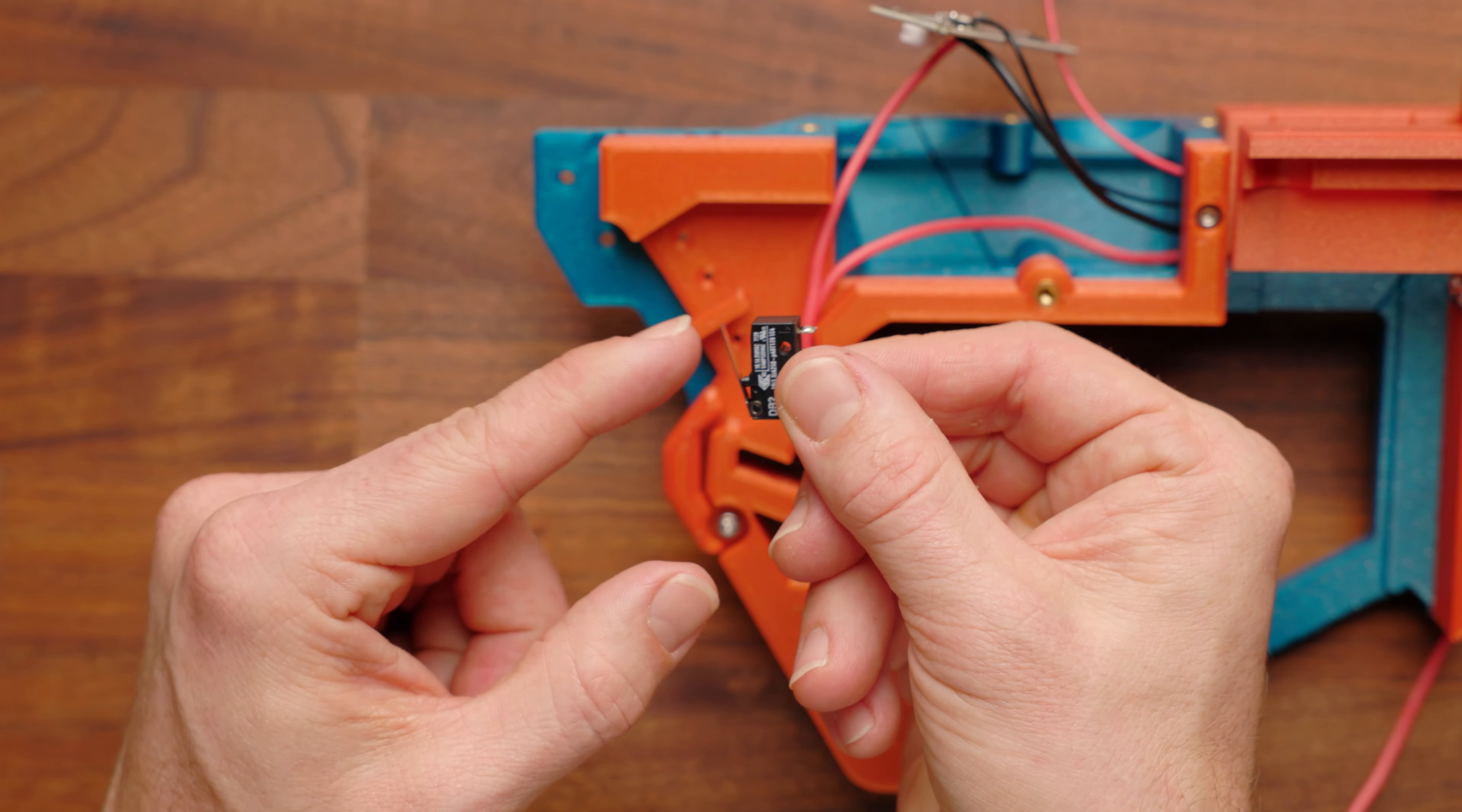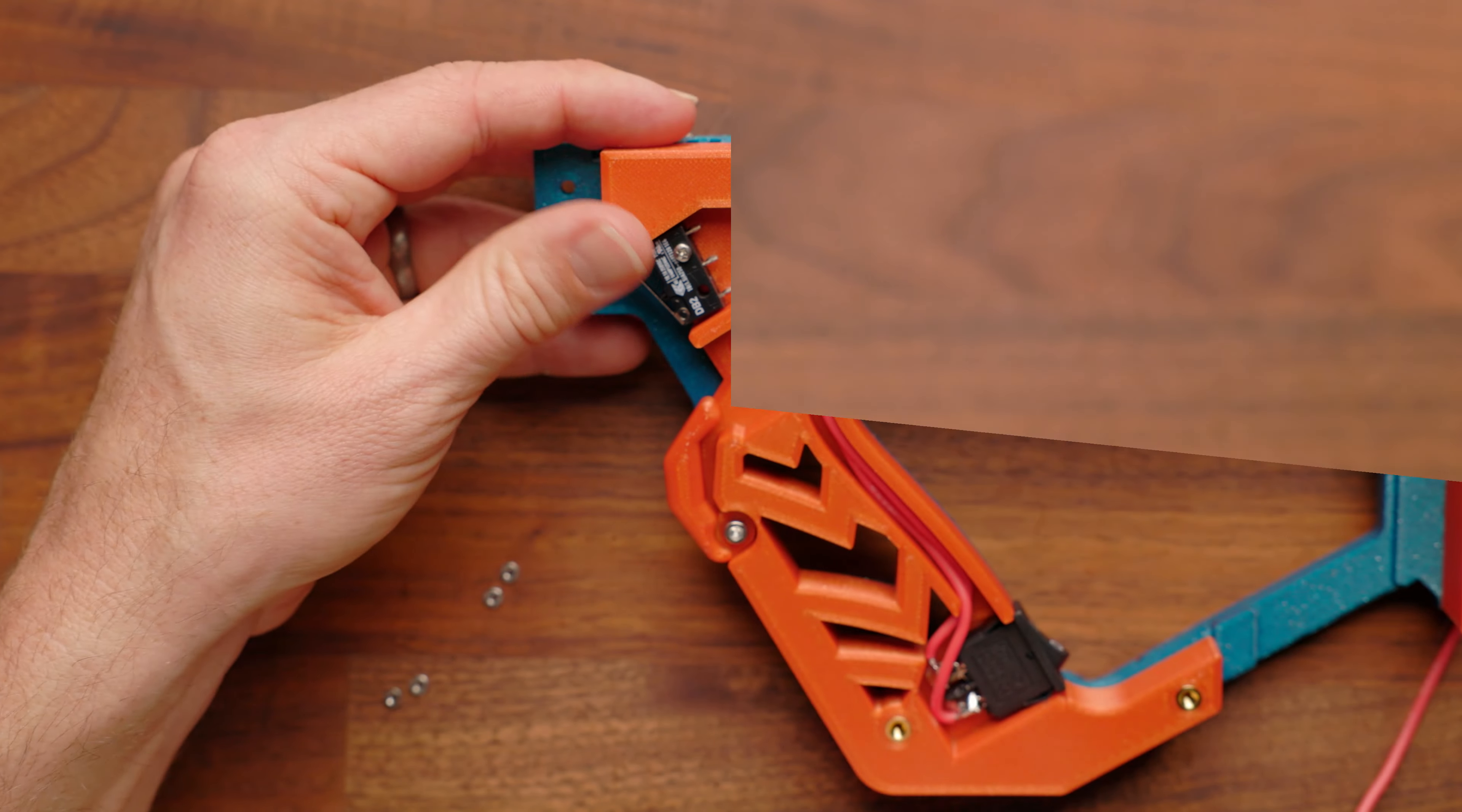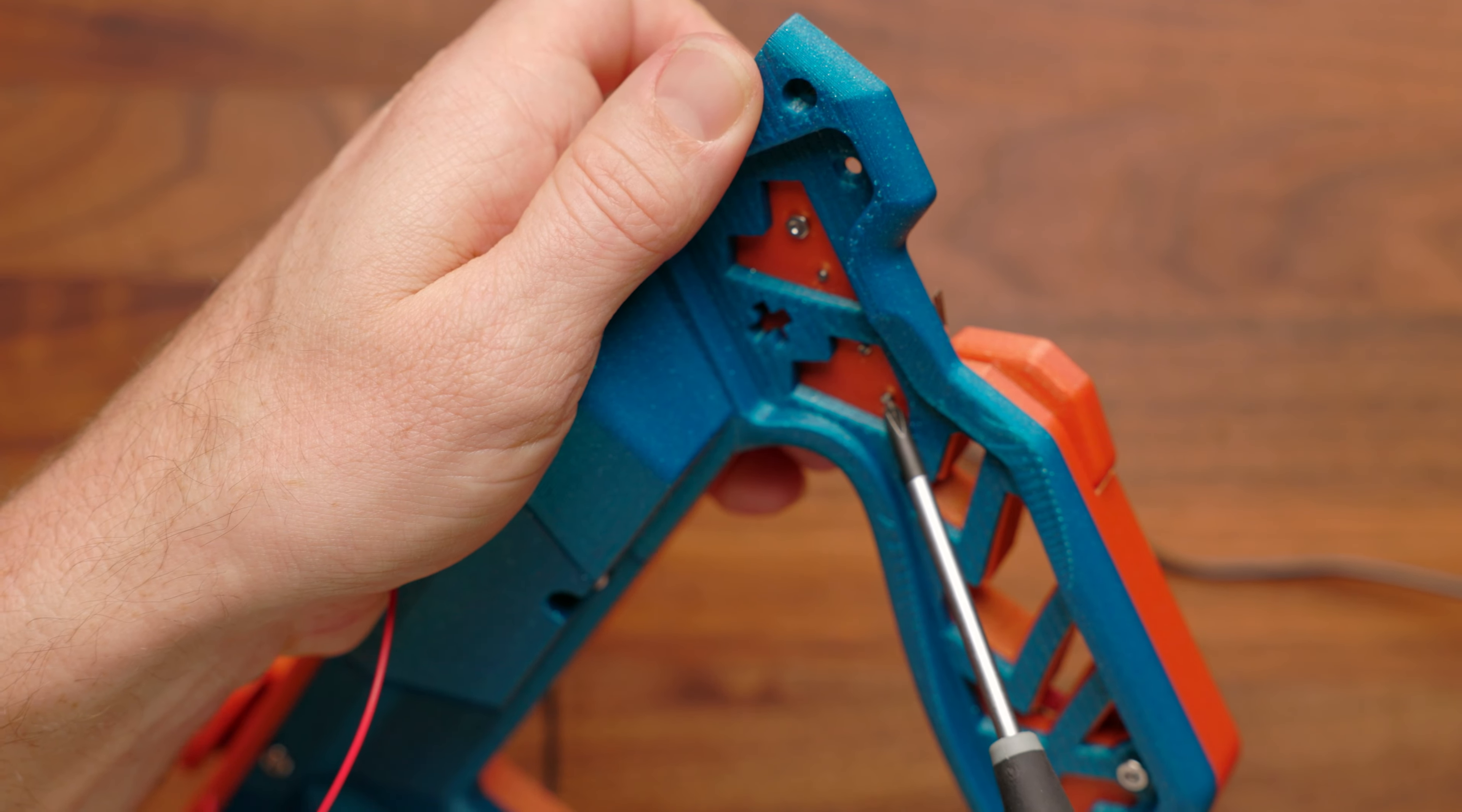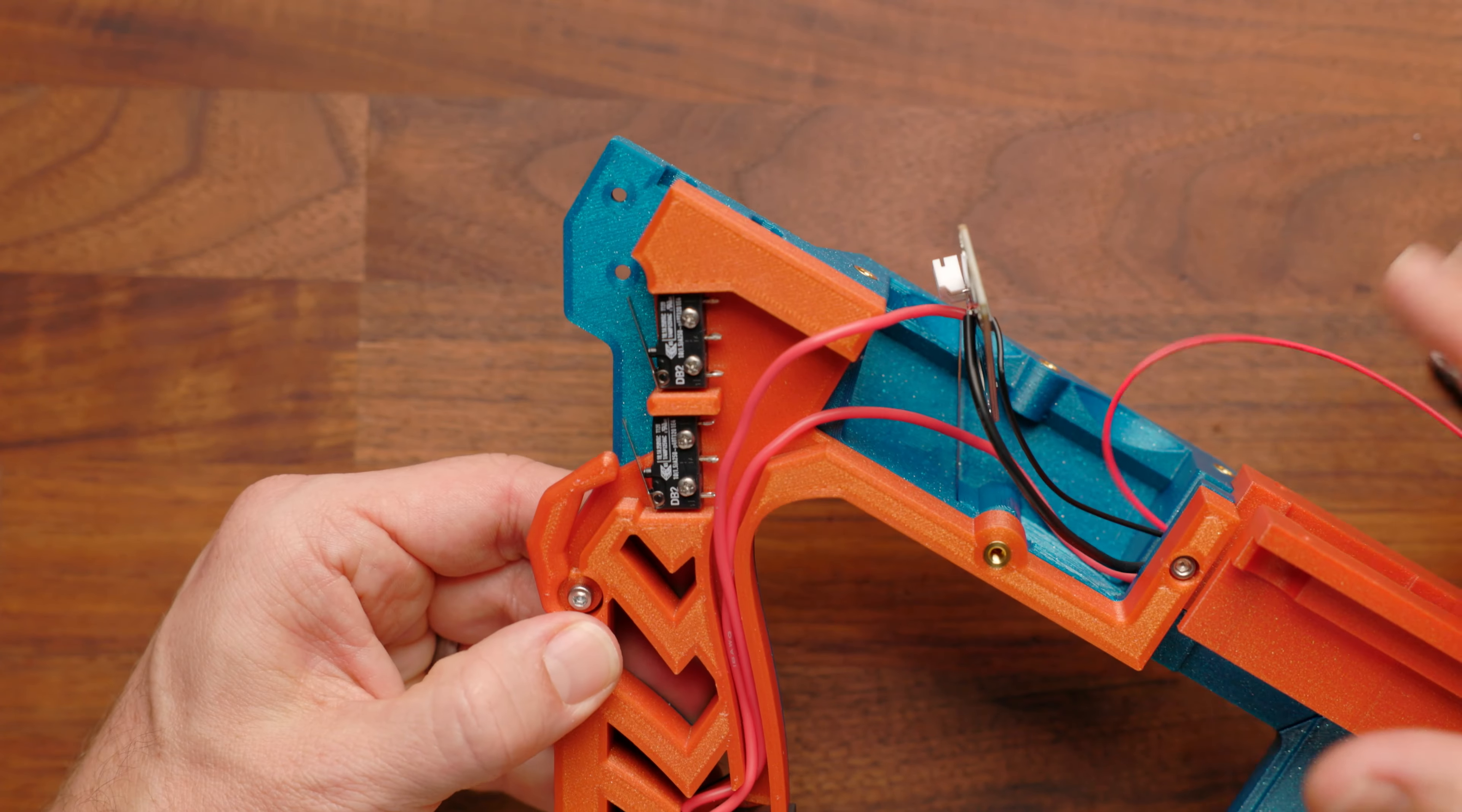Next, we're going to install both of our switches. You're going to want to install them with the lever pointed up. Each one gets two M2 by 12 screws and an M2 nut on the opposite side. You're just going to tighten this doesn't have to be over tight, and then repeat for the other three. After you've got all four of the bolts and all four of the hex nuts on the other side, your switches are ready to solder to.